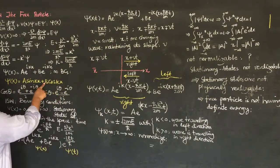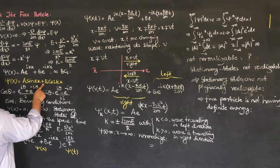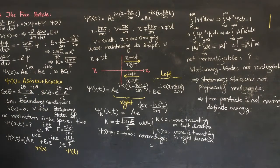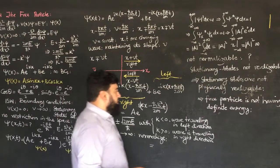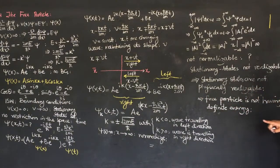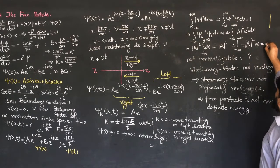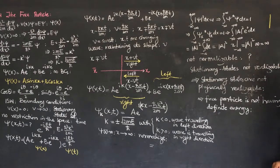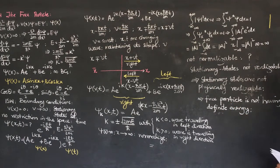In the case of the infinite square well, we were having definite energies of the wave function and physically realizable states. But for this free particle, there is no definite energy because its wave function is not normalizable — it is undefined. This is the reason that the free particle can have any energy; it cannot have a specific or definite energy.